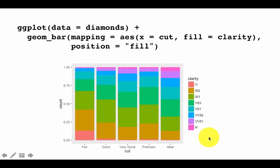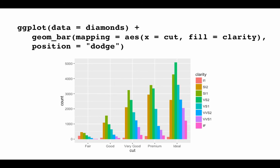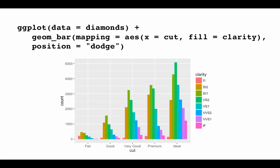Finally, there is a position option called dodge. Within each bar there are many different clarities — instead of stacking them one on top of the other or overlapping them, dodge plots them side by side. The option you use for position is called dodge; it places all the sub-bars side by side within each group. Once again, not a very useful plot because it's very difficult to get your hands around all the details that such a plot provides.